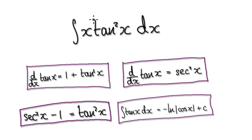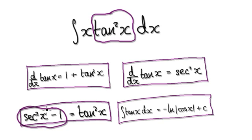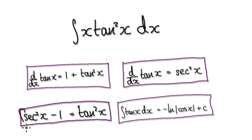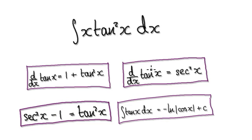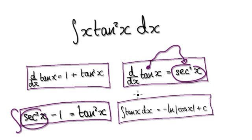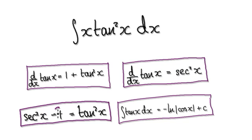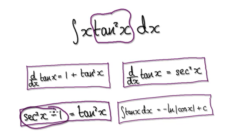So to do this, whenever you want to integrate tan squared of x, try to think about this identity. Because if you put this into here, you see you can integrate this separately and integrate this separately. This thing here is easy to integrate because if you look at tan of x and differentiate it, it gives you secant squared. So if you integrate secant squared, it gives you tan of x, and this thing here just integrates to x.